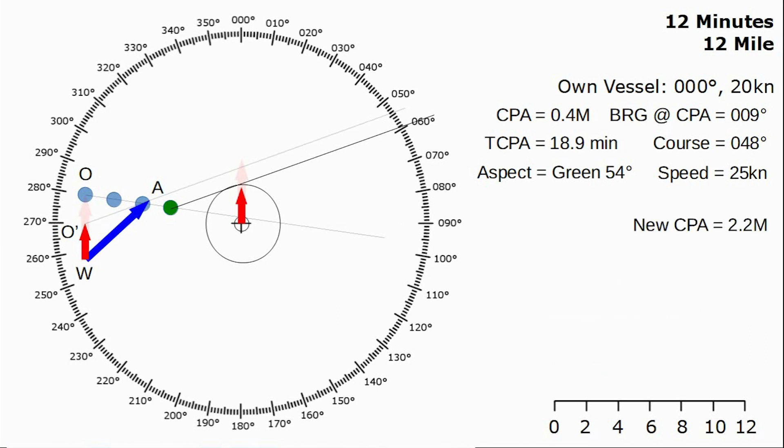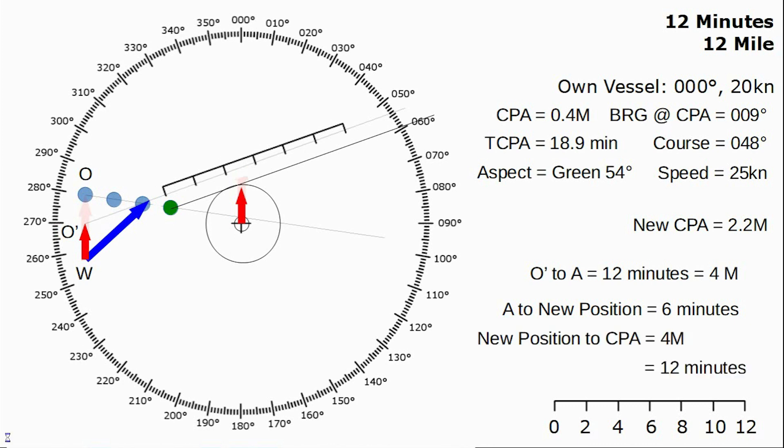Then we want our new time to the closest point of approach. This is a multi-step process. First off we've got to get the baseline figure which is the distance from O' to A which in this case is 4 miles. We know that has been covered in 12 minutes. We also know from A to the new position has taken 6 minutes. Then we want to measure the distance from that new position to the CPA which actually comes out at 4 miles again which is 12 minutes.